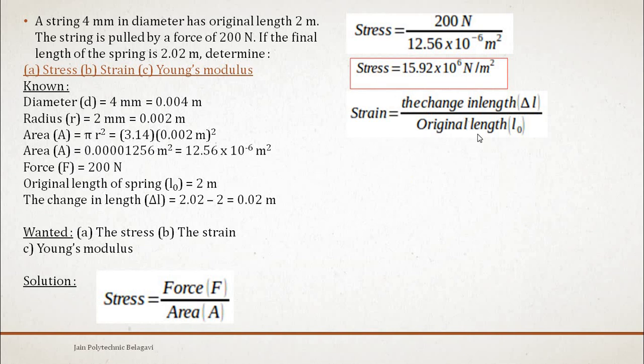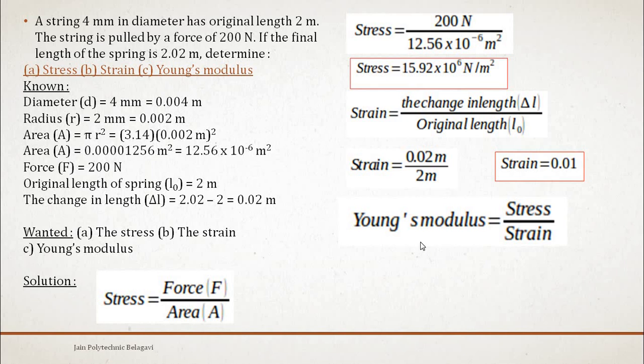Now we will come across strain. Change in length to the original length. We have learned this in the previous video. The change in length delta L is 0.02, and the original length is 2 meters. Strain is 0.02 meter divided by 2, which equals 0.01. Strain is unitless because numerator and denominator have the same unit, meter and meter, it cancels. Strain does not have any unit.